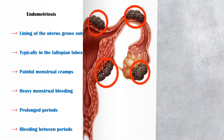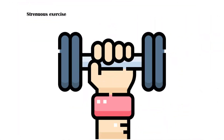Obesity. Strenuous exercise. Excessive exercising interferes with the hormones responsible for menstruation. Female athletes and women who participate in intensive training and physical activities, such as ballet dancers, often develop menstrual irregularities.